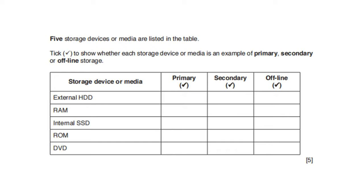Five storage devices are listed — tick whether each is primary, secondary, or offline storage. Primary storage is directly accessed by the CPU; secondary storage is inside the computer case but not directly accessed by the CPU; offline storage is outside the computer case. External HDD — offline storage. RAM — primary storage, directly accessed by the CPU. Internal SSD — secondary storage, inside the computer case. ROM (read-only memory) — primary storage. DVD — offline storage, not inside the computer.